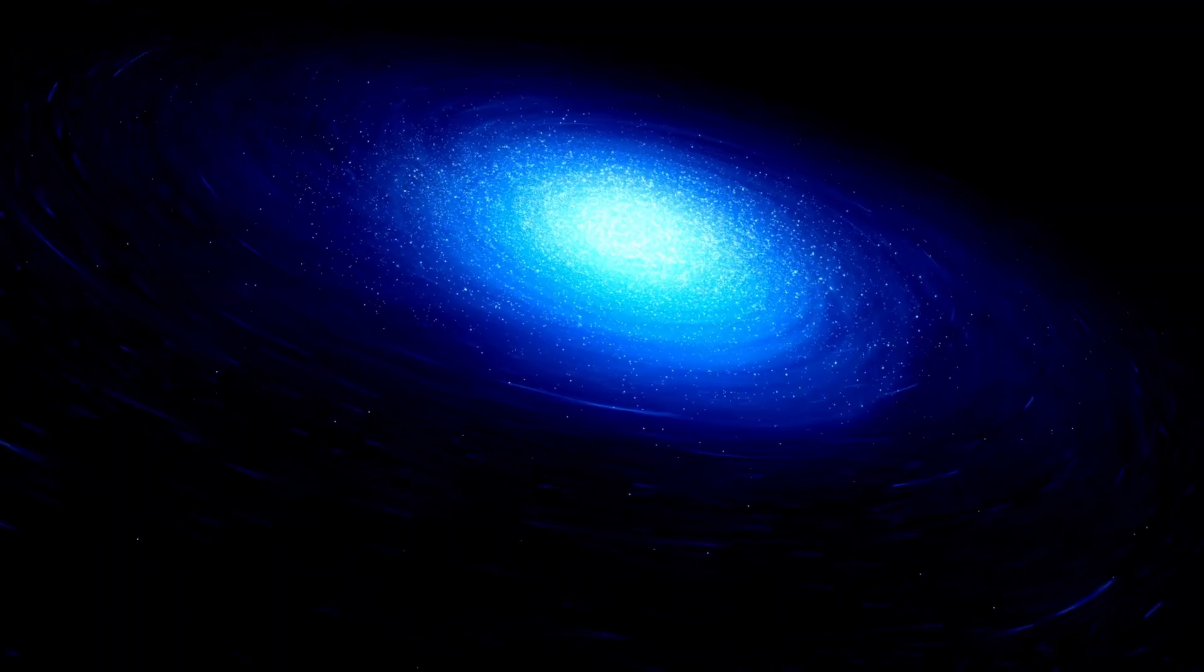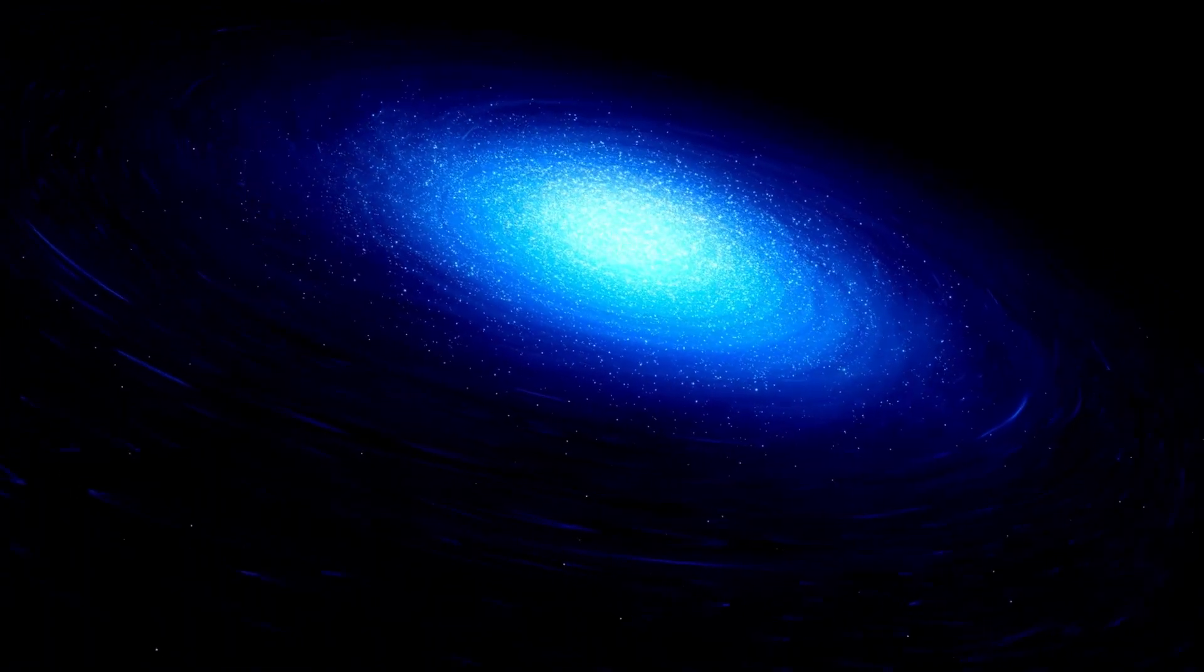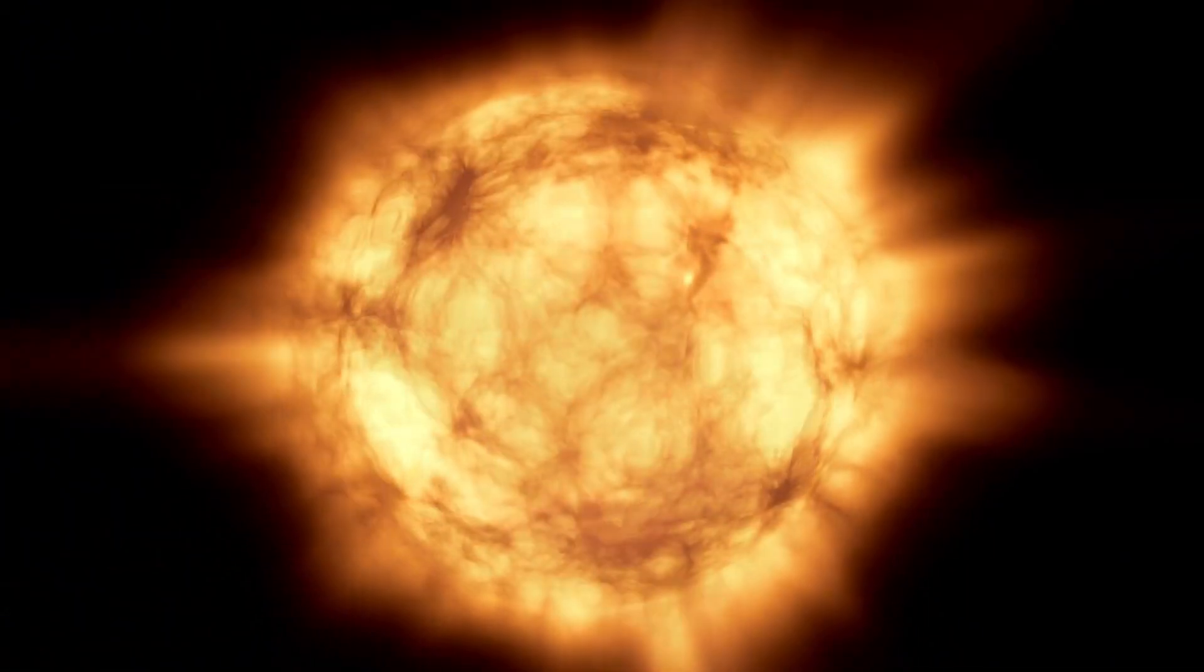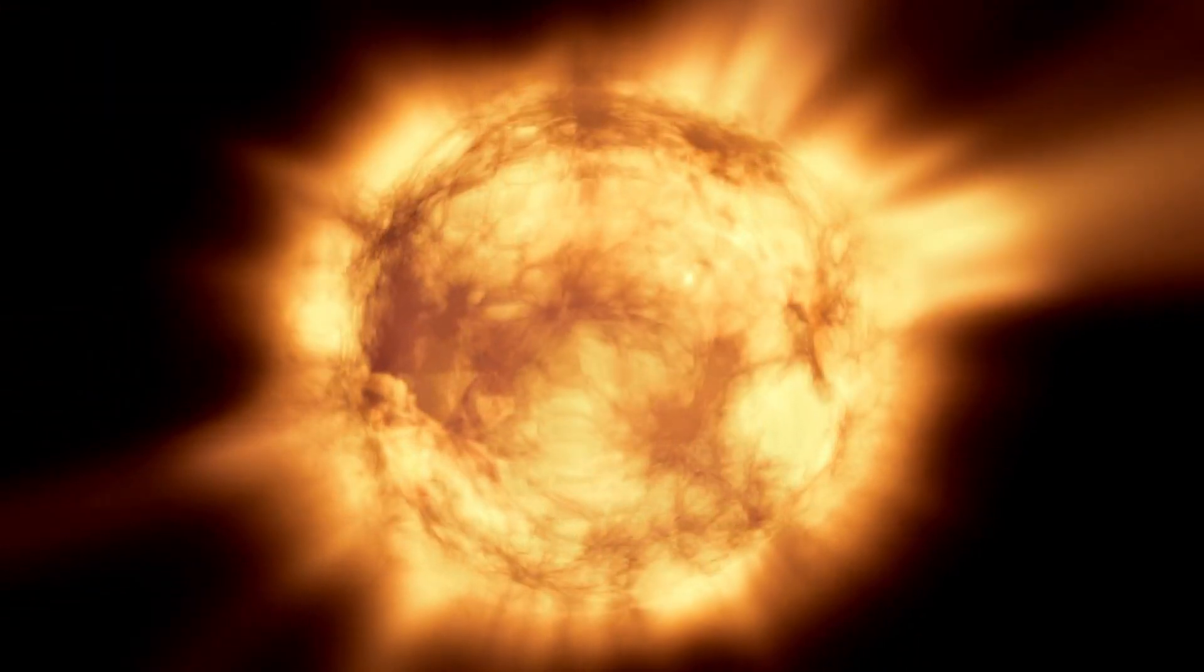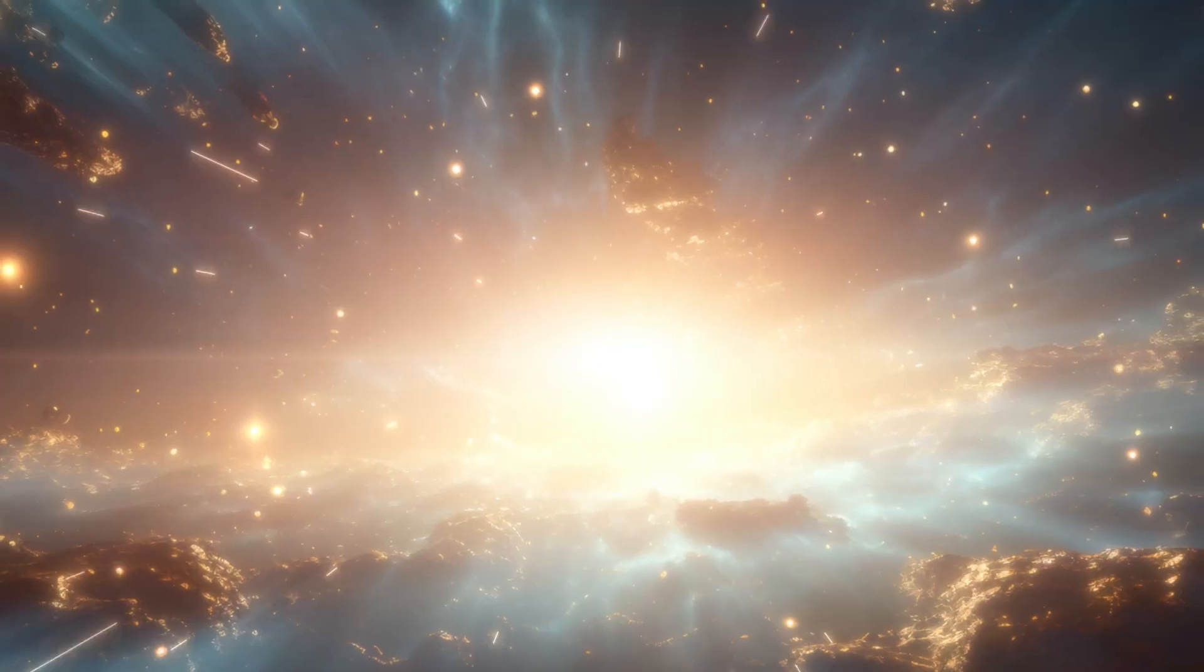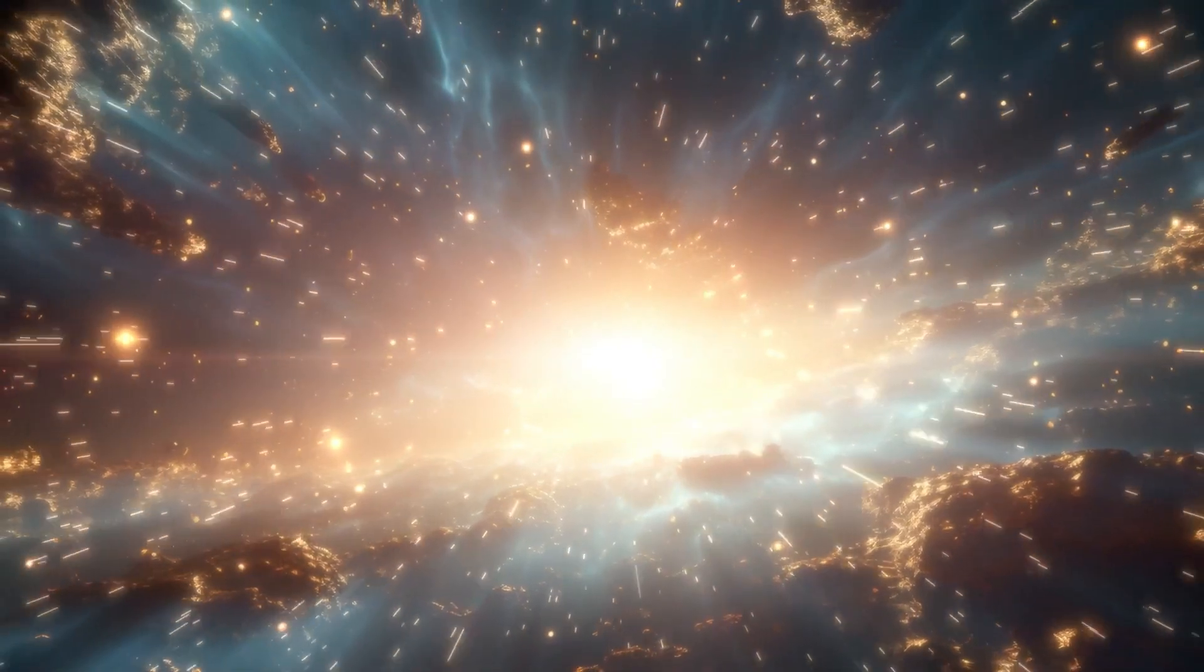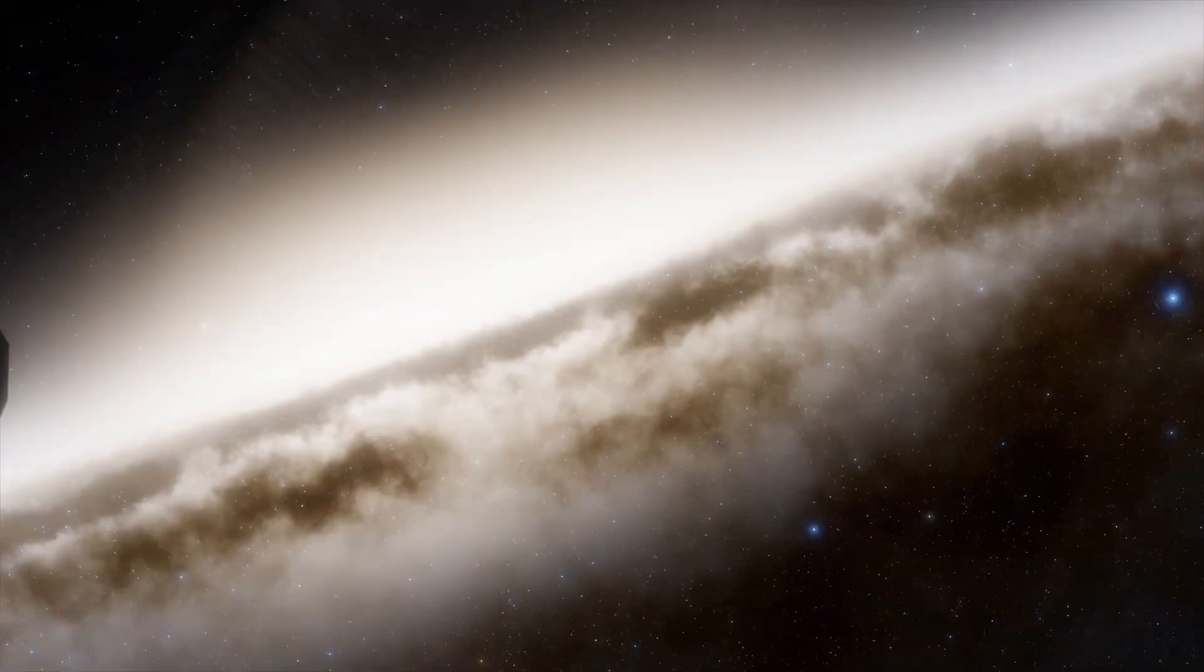Betelgeuse's huge size and relatively close proximity, roughly 650 light years away, allow us to determine a disk, in fact, while observing it. Most stars are just too far away, appearing as simple points of light. Yet, with Betelgeuse, we have a unique opportunity to capture direct variations in its light output through photography. So, we not only have a star that could possibly go supernova, but also plenty of information to gather, including images, even though they might be a bit hazy.